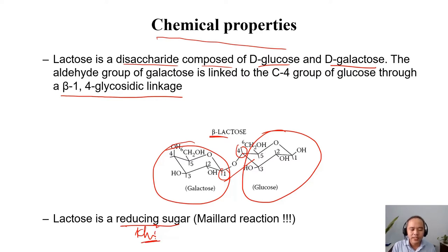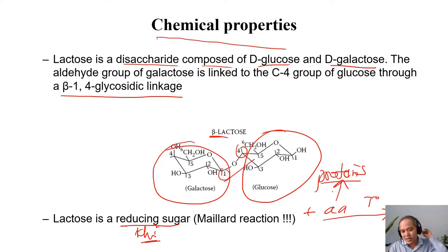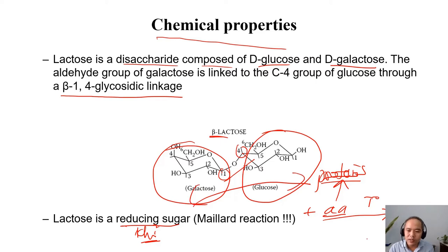Why should we know that lactose is a reducing sugar? Because a reducing sugar can take part in the Maillard reaction. The Maillard reaction occurs between reducing sugar and amino acids under high temperature. So when you heat food, lactose will react with amino acids in milk. Milk contains protein, and protein is made of amino acids. So saying the Maillard reaction is between reducing sugar and protein is also true. Because milk contains both of these two groups of components, when you heat milk, this reaction may occur. This is one of the reactions that causes browning of food — it belongs to the browning reactions.